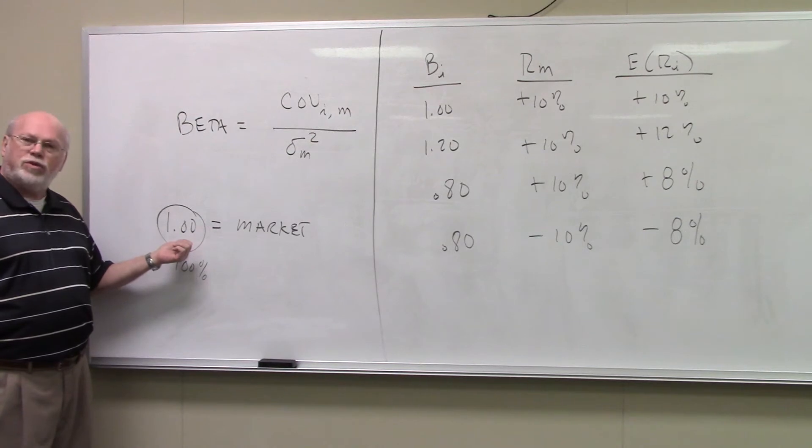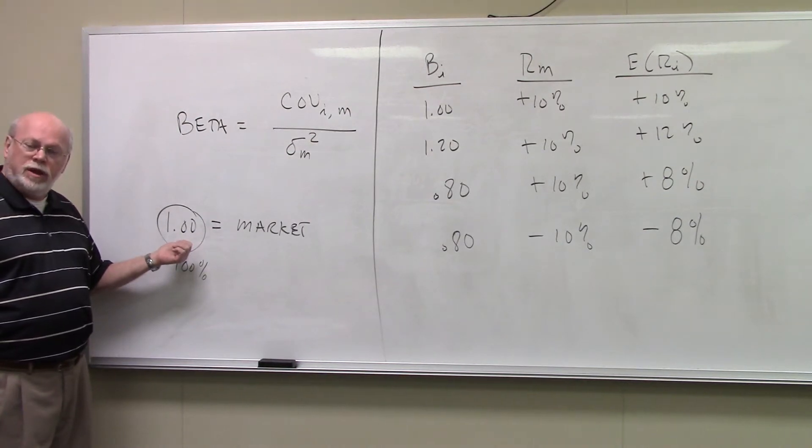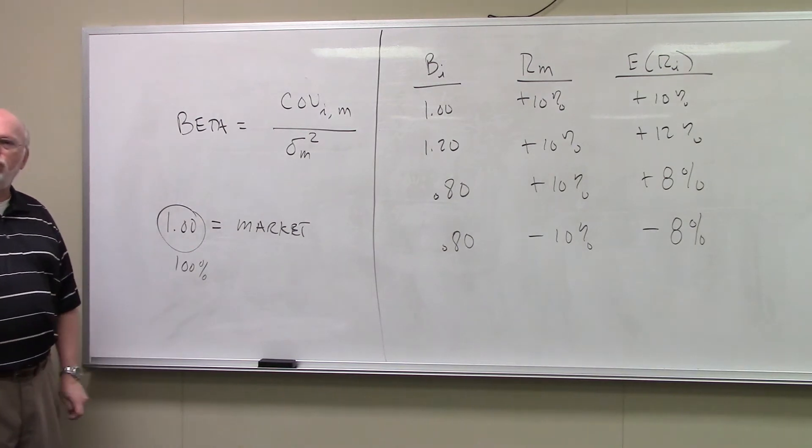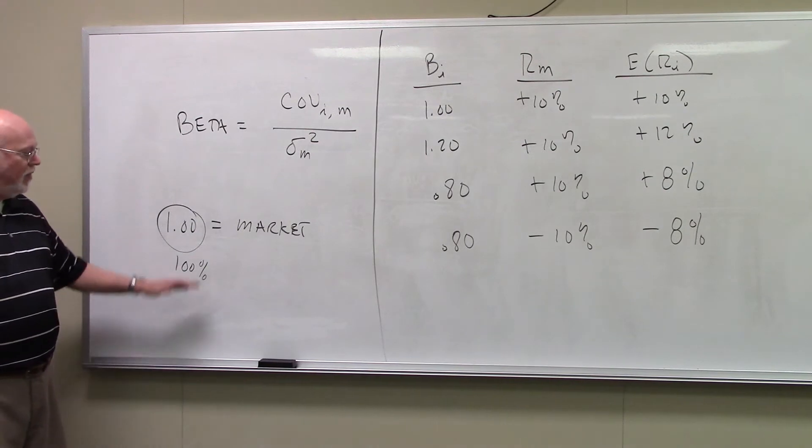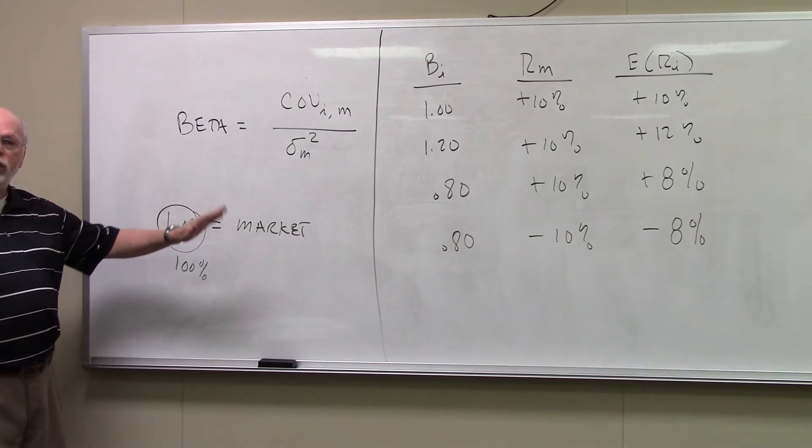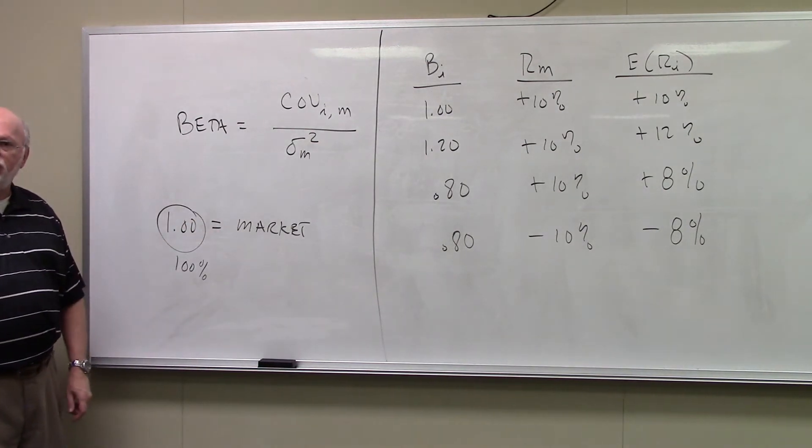If you had a stock with a beta of 1.2, that means you're taking on 120% of the risk of the market, and you would also like 120% of the market's return. That's beta. That's how you interpret it, and we'll talk more about that in just a second here.